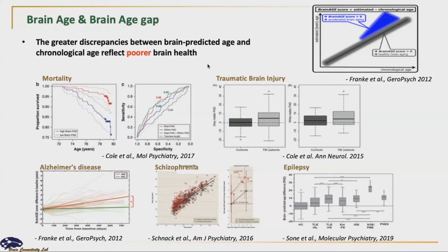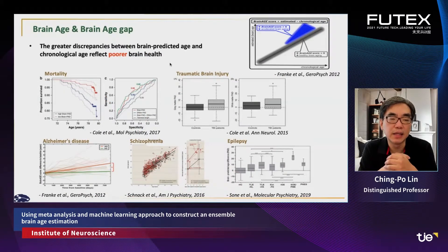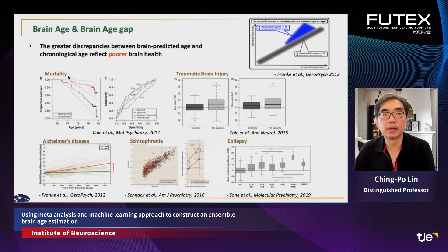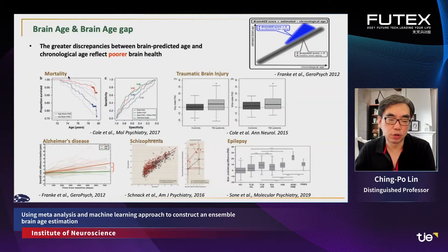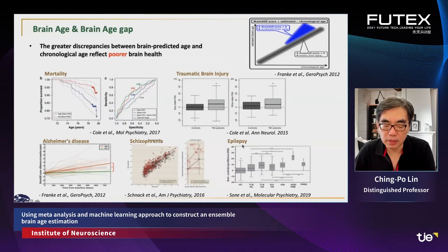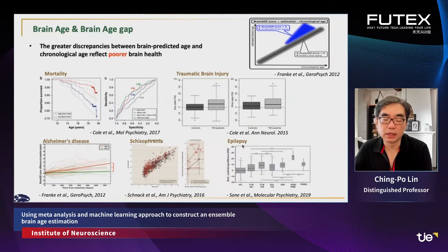For example, someone with a chronological age of 70 but whose brain age is estimated to be 80 has a 10-year gap compared to people of the same chronological age — which is why these subjects have high risk of mortality. There are many papers discussing how such a gap may be a good index for representing a subject's risk of neurogenic disease. Some papers also discuss subjects with traumatic brain injury, Alzheimer's, schizophrenia, and epilepsy, who may also have an increased brain age gap, meaning they have more burden compared to healthy subjects.